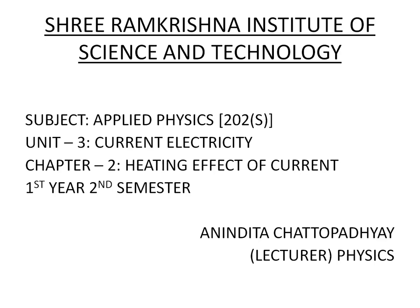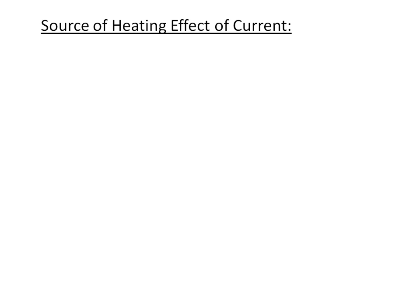Today we are going to start Unit 3, that is Current Electricity. This is Unit 2: Heating Effect of Current. When a metallic conductor is in the middle of a current flow, then after a certain time it becomes hot. This is called the Heating Effect of Current.